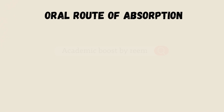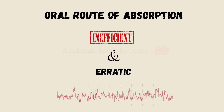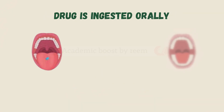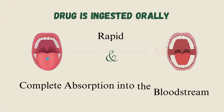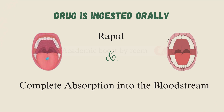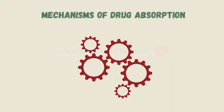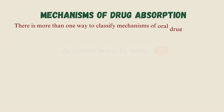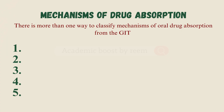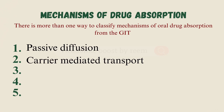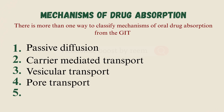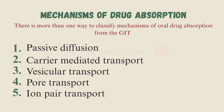A poor route of absorption may result in inefficient and erratic drug therapy. Whenever a drug is ingested orally, we would like it to have rapid and complete absorption into the bloodstream. There is more than one way to classify mechanisms of oral drug absorption from the GIT. One reliable way is: one, passive diffusion; two, carrier-mediated transport; three, vesicular transport; four, pore transport; and five, ion-pair transport.